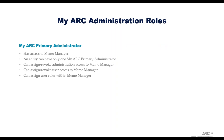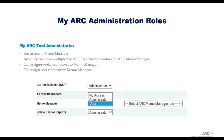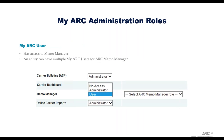The Primary Administrator has access to Memo Manager — an entity can have only one. The Primary Administrator can assign or revoke administration access and user access to Memo Manager, and can assign user roles within Memo Manager. To create a new Primary Administrator or change who the administrator is, you fill out MyArc Form 235. The MyArc Tool Administrator also has access to Memo Manager, and an entity can have multiple Tool Administrators. The Tool Administrator can assign or revoke user access but cannot assign or revoke administrator access. A MyArc User has access to Memo Manager, multiple users are allowed per entity, and they have no additional administrative rights.